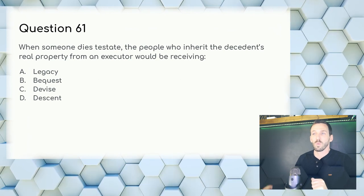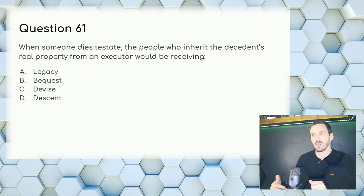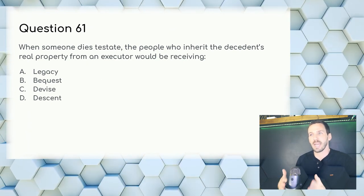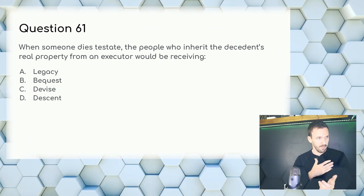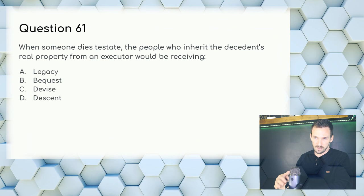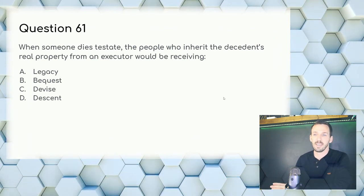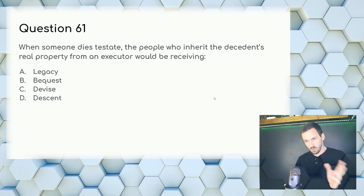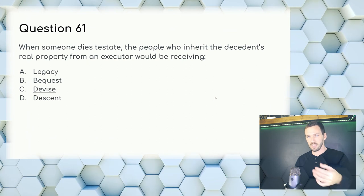Question 61: When someone dies testate (with a will), the people who inherit the descendant's real property from an executor would be receiving — another vocabulary word from memory. When someone dies with a will (testate), the transfer of real property is called a devise. Answer: C, devise.